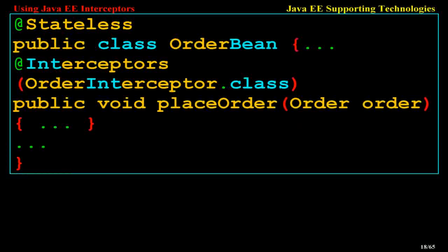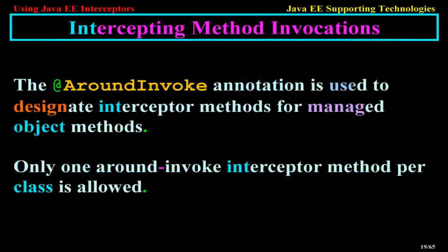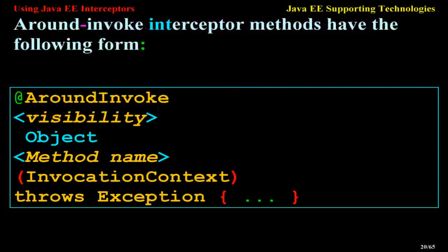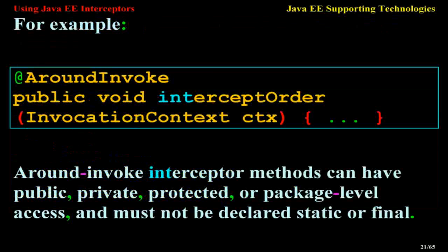Intercepting Method Invocations: the AroundInvoke annotation is used to designate interceptor methods for managed object methods. Only one AroundInvoke interceptor method per class is allowed. AroundInvoke interceptor methods have the following form: @AroundInvoke, visibility, Object methodName(InvocationContext) throws Exception. For example: @AroundInvoke public void interceptOrder(InvocationContext ctx). AroundInvoke interceptor methods can have public, private, protected, or package-level access, and must not be declared static or final.